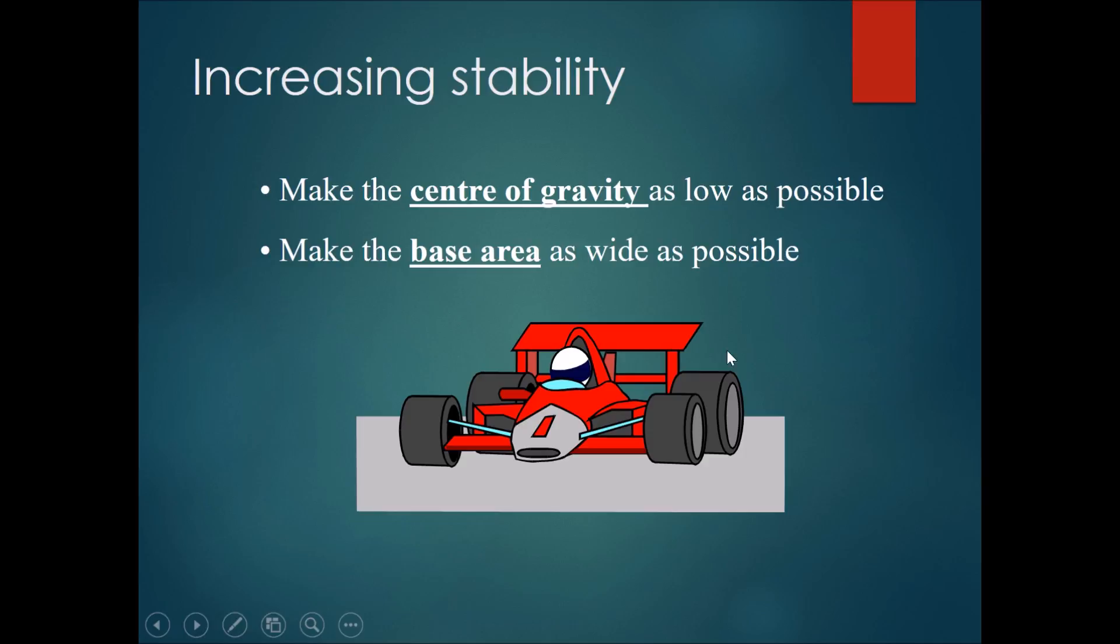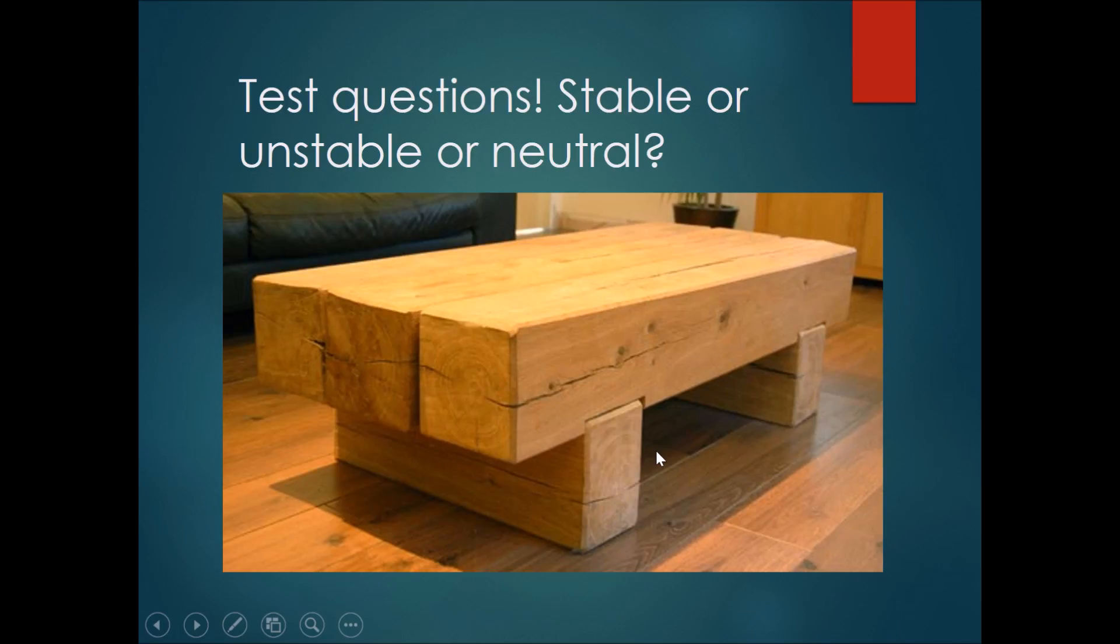Over here we have a picture of a racing car. Ever wondered why the racing car looks flat and also looks a little bit wide? Quite simply, they want to make the center of gravity lower, making it flatter and make the base area wider.